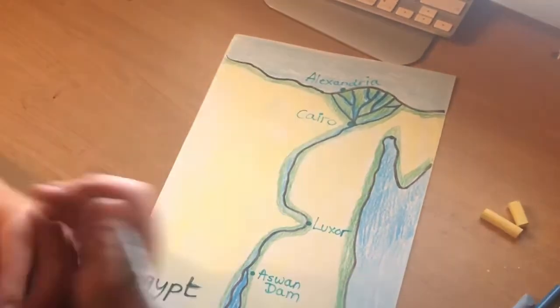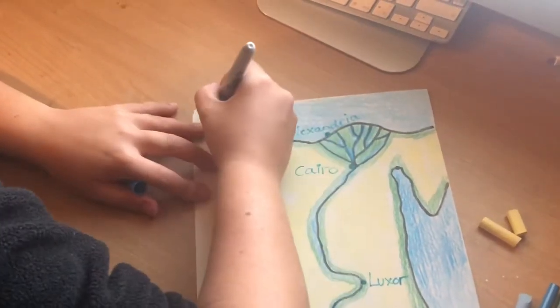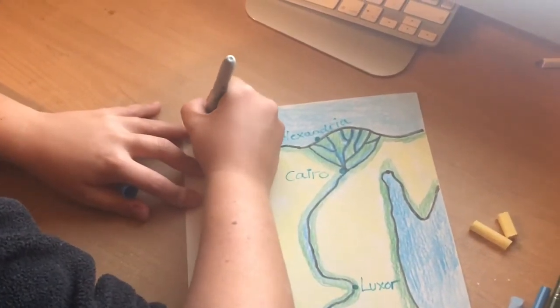And then we've just got to label our seas. So the sea that splits Europe and Africa is the Mediterranean Sea.